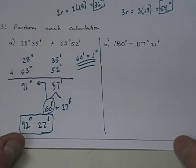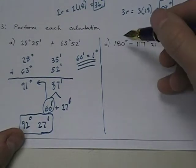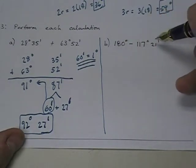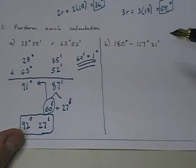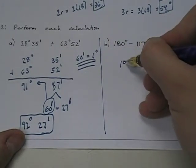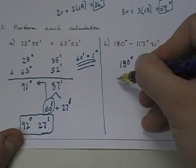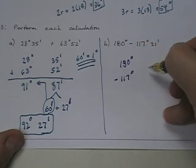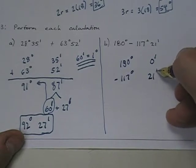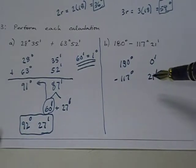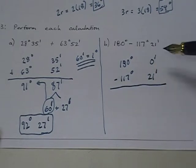The second one, just to make sure you can work with degrees, minutes, and seconds, 180 degrees minus 117 degrees and 21 minutes. Very similar to an addition problem. I'm going to say 180 degrees minus 117 degrees and then 0 minutes minus 21 minutes.